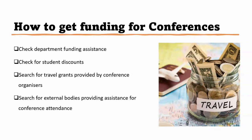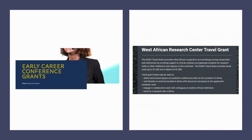Finally, external bodies may also give grants. You can find them through Google by searching for external bodies giving grants for conferences or small research grants. Speaking of external bodies — there's a grant for West African researchers where, if you're a PhD student, they give you $1,500 for transport and $1,500 for a stipend. The Association of Commonwealth Universities also gives early career grants for conference attendance worth close to £2,000.